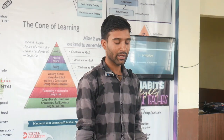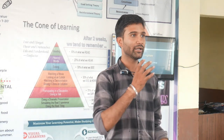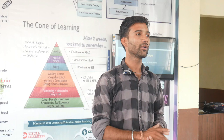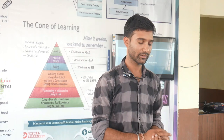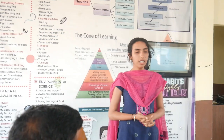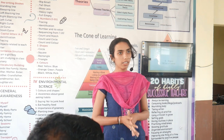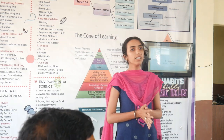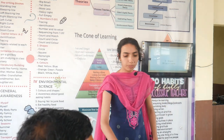Ecosystem is a community of living things. A is for ampere — it's a unit of current. Current is the rate of flow of charge.